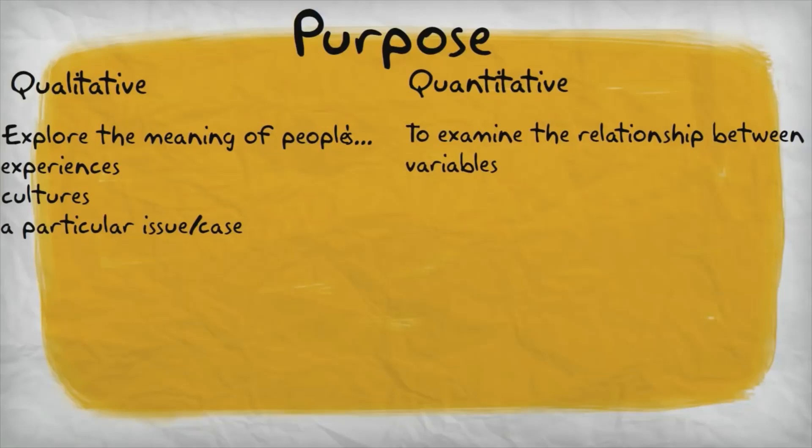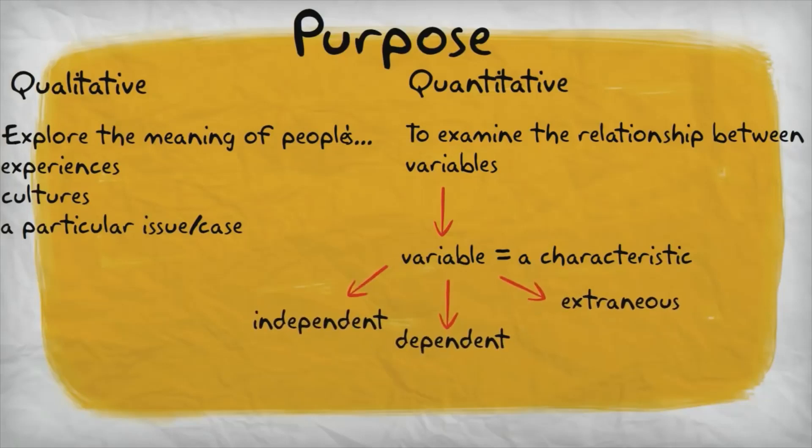Let's define a variable. A variable is a characteristic. We'll talk more about this in just a second. For this class, we're going to learn about three kinds of variables: independent, dependent, and extraneous.